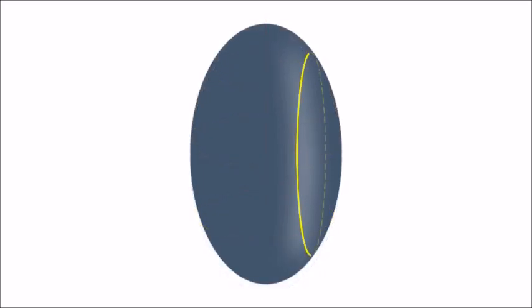Please note that the plane sections normal to one axis are circles, and all the other plane sections are ellipses.